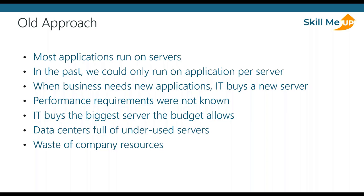The old approach was everything ran on servers — one application per server. When businesses needed new applications they'd buy new servers, and then virtual machines and hypervisors came along so we could run more applications on one server. Because growth tends to be something people are optimistic about, and core IT has learned that if you underbuy you end up paying top dollar for more machines, there's always a push in technology to buy the latest, greatest thing.